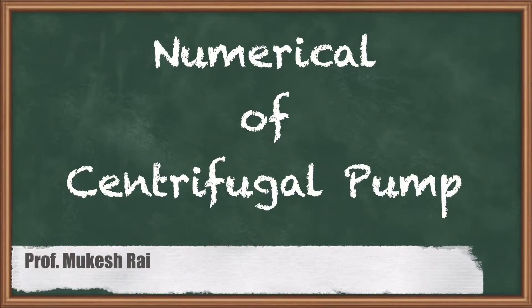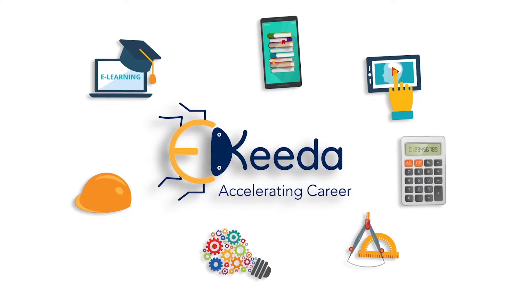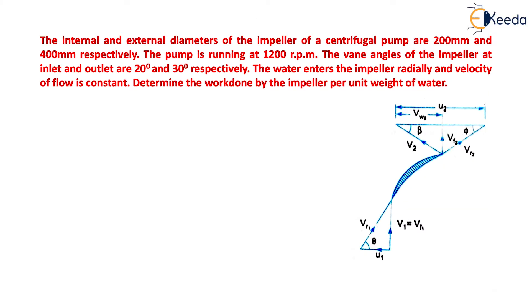Hello students, today we are going to solve a numerical on centrifugal pump. The question is: the internal and external diameter of the impeller of a centrifugal pump are 200 mm and 400 mm respectively. The pump is running at 1200 rpm. The vane angles of the impeller at inlet and outlet are 20 degrees and 30 degrees respectively. The water enters the impeller radially and velocity of flow is constant. We have to determine the work done by the impeller per unit weight of water.